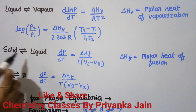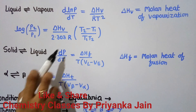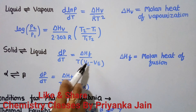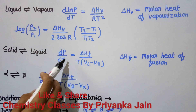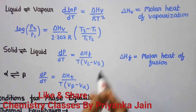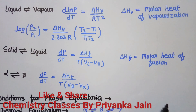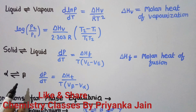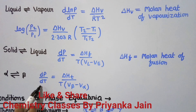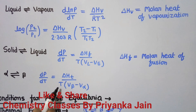For solid-liquid equilibrium, the Clapeyron equation applies with ΔH_f as the molar heat of fusion. For the transition between two solid phases such as alpha and beta, the equation is dP/dT = ΔH_T / (T·(V_β − V_α)), where ΔH_T is the molar heat of the solid-solid transition.